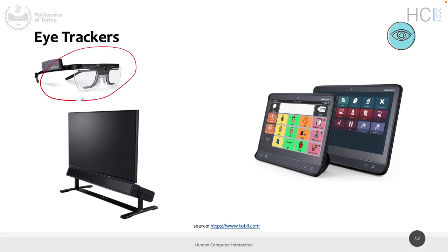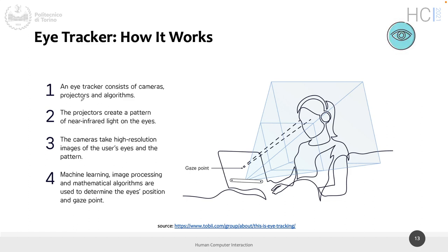In Windows, if you plug in an eye tracker, eye control settings appear. This is not for getting heat map or scan path data, but for interacting with your eyes. Why do you need an activation method? If you have an application with buttons and need to press one with your eyes, there's a fundamental problem: you look at everything. There is no way to distinguish if you're just moving your eyes to read versus intending to press something. This is unlike a mouse, where you move the pointer and then deliberately click.